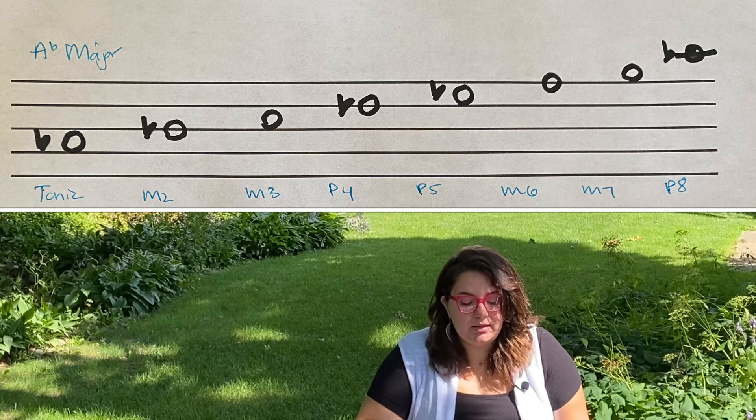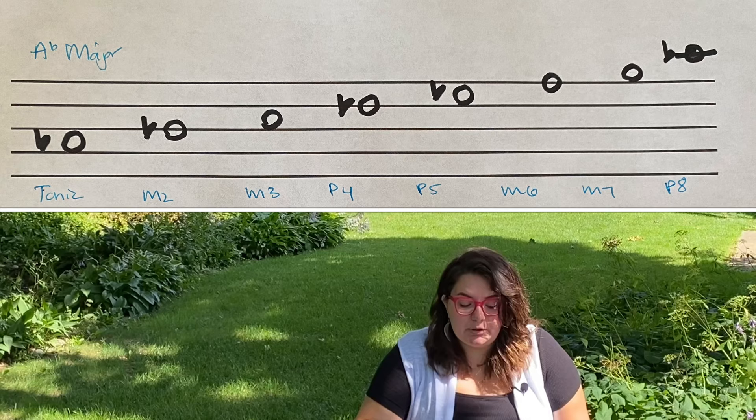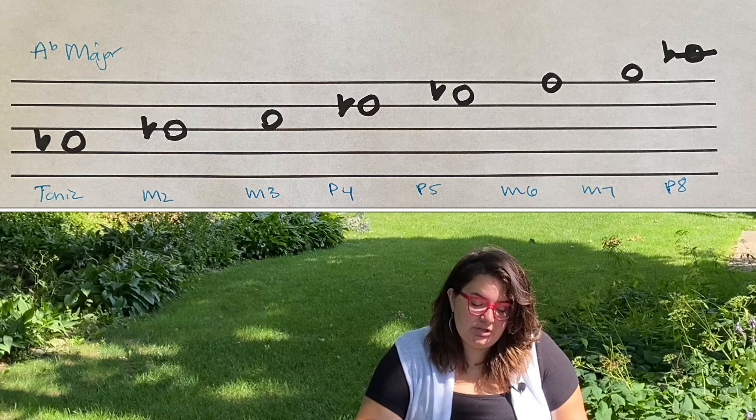The scale intervals for A-flat are: A-flat is our tonic, B-flat is our major second, C is our major third, D-flat is our perfect fourth, E-flat is our perfect fifth, F is our major sixth, G is our major seventh, and A-flat is our perfect eighth.